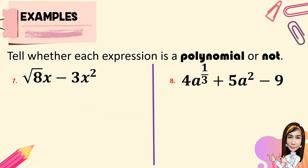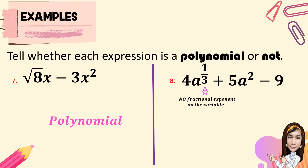For number 7, we have square root of 8x minus 3x squared. As you noticed, the square root is of 8, and 8 is not a variable, so this expression is a polynomial. For number 8, we have 4a to the 1/3 power plus 5a squared minus 9. There must be no fractional exponent on the variable, so this expression is not a polynomial.